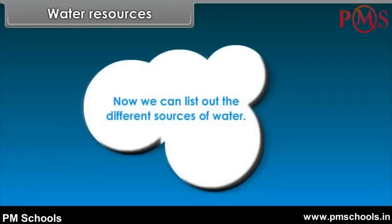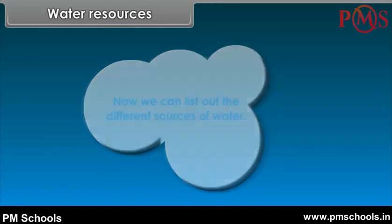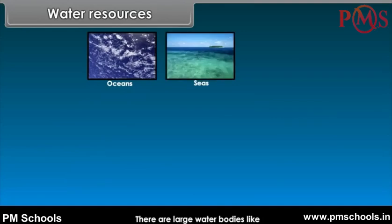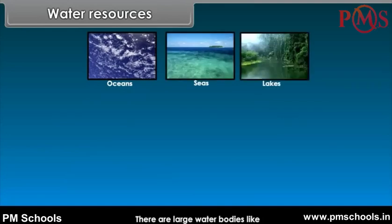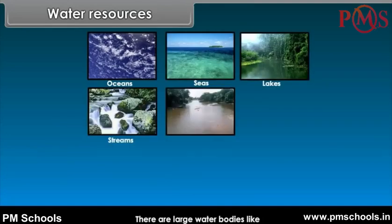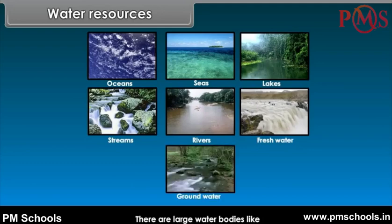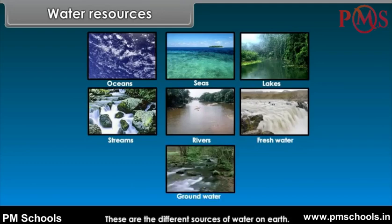Now we can list out the different sources of water. There are large water bodies like oceans, seas, lakes, streams, rivers, freshwater, groundwater, etc. These are the different sources of water on Earth.